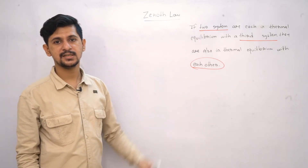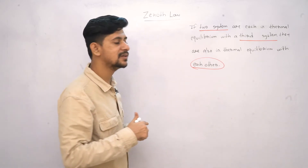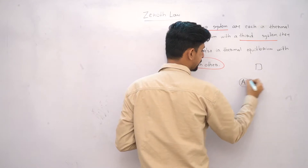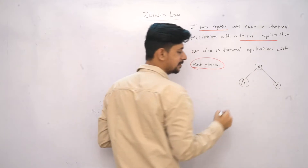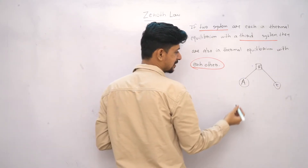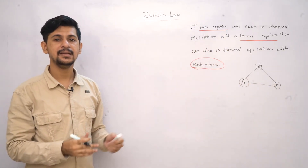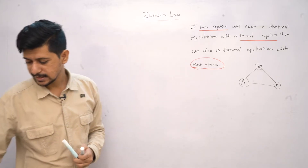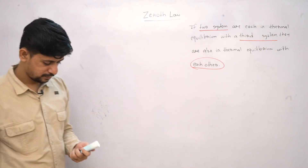The same thing we discussed earlier: if two systems are each in thermal equilibrium with a third system, they are also in thermal equilibrium with each other. That is, if A and C are both in thermal equilibrium with B — meaning T_A equals T_B and T_C equals T_B, both at the same temperature — then A and C will also be at the same temperature, meaning they will be in thermal equilibrium.